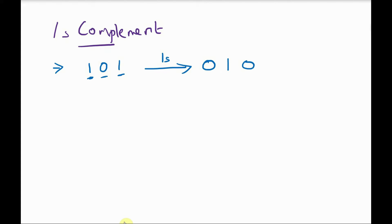So, this is the 1's complement of 1, 0, 1 — that is 0, 1, 0. If we consider another example, consider 1, 0, 0, 0, 1, 1.